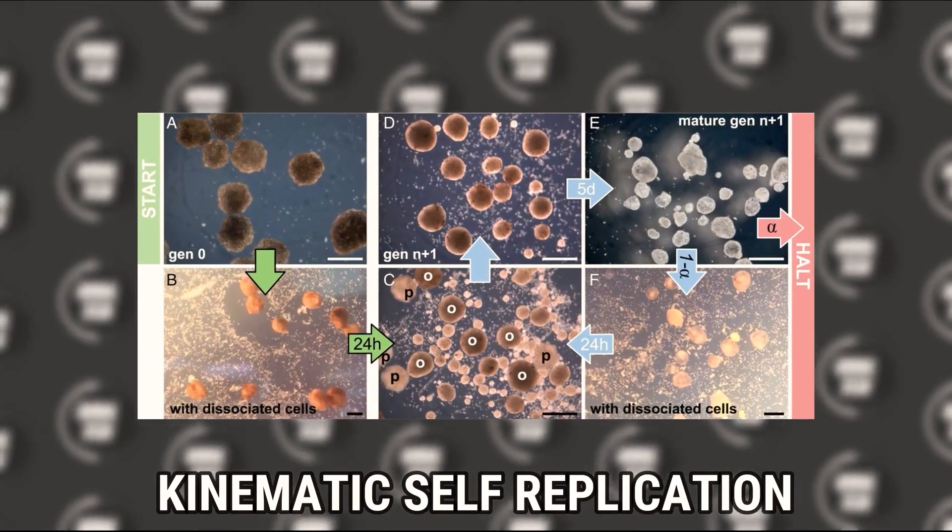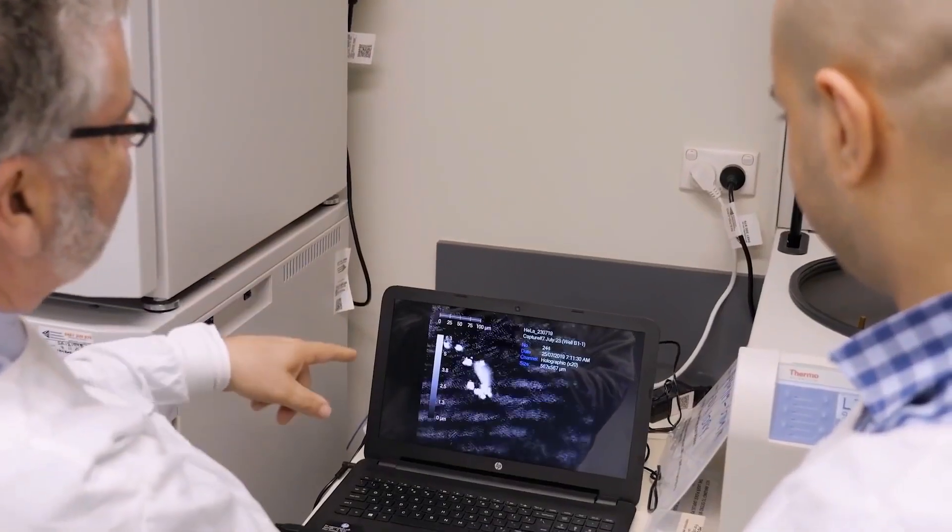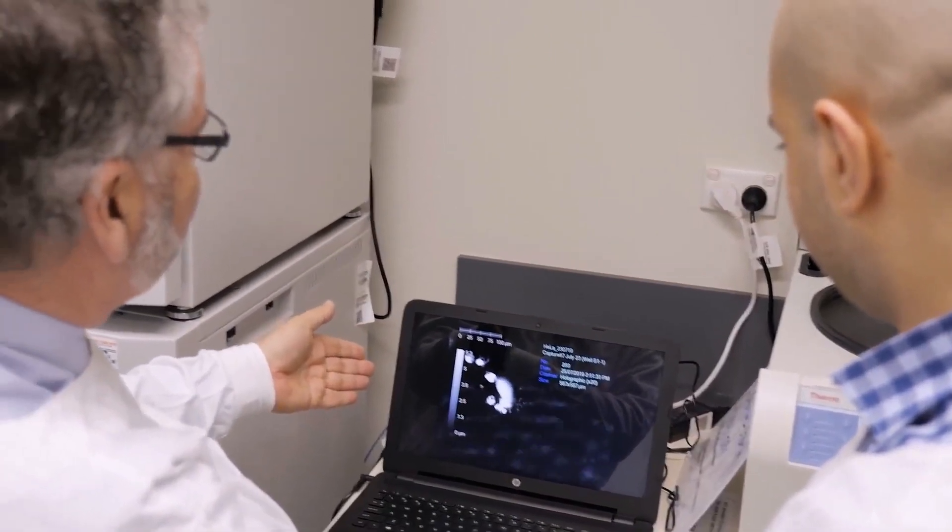It's a new form of biological reproduction different from any animal or plant reproductive process known to science. Now termed kinematic self-replication, scientists are now very hopeful that it could play a crucial role in further explaining the origin of multicellular life on Earth.